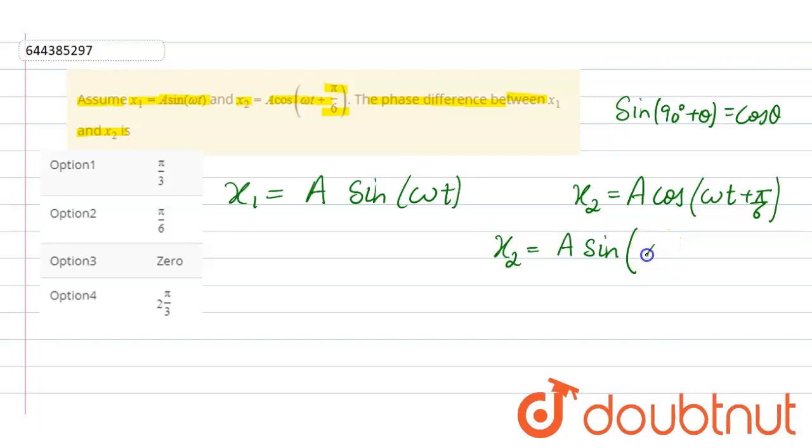So here we do pi by 2 (90 means pi by 2) plus omega t plus pi by 6, right?